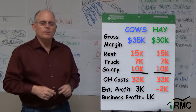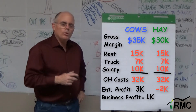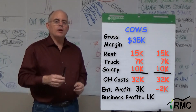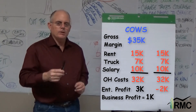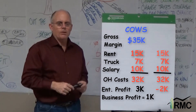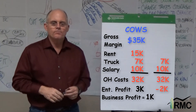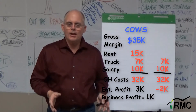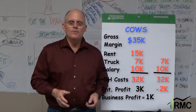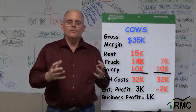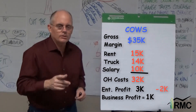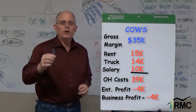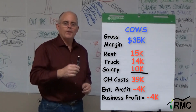What do you think I ought to do to increase my profit? Well, most people say stop haying. That sounds reasonable — after all, the hay enterprise is losing money. If I get rid of the hay, I no longer have to pay that rent. But I still have the pickup. Will the bank let me pay only half of the interest now that I use the truck only half the time? I don't think so. The livestock have to pick up the full cost of that truck. Total overhead costs now are $39,000, turning our $1,000 business profit into a $4,000 loss.